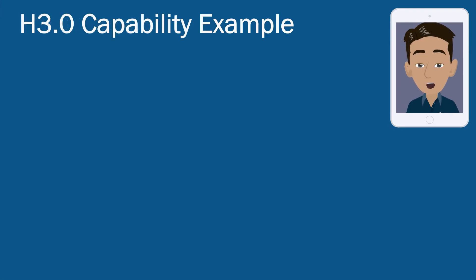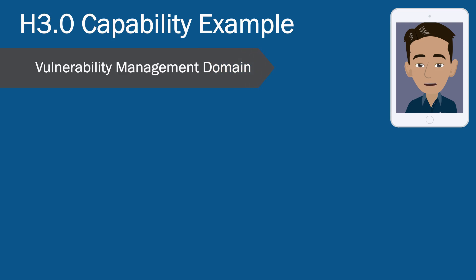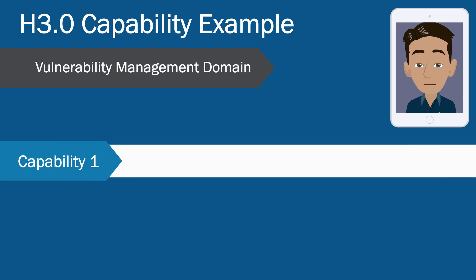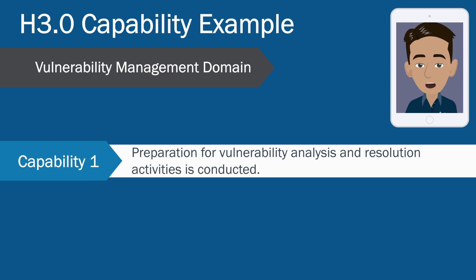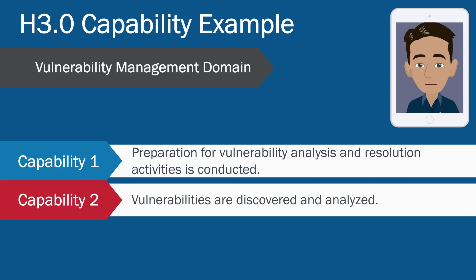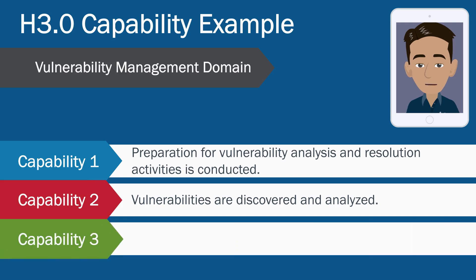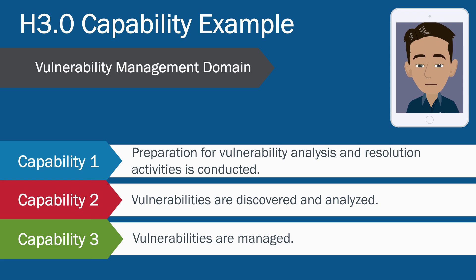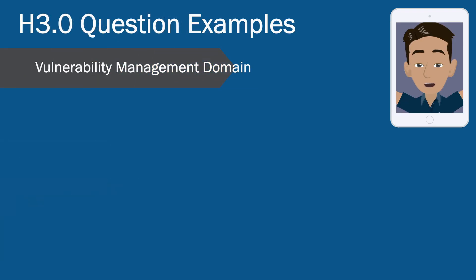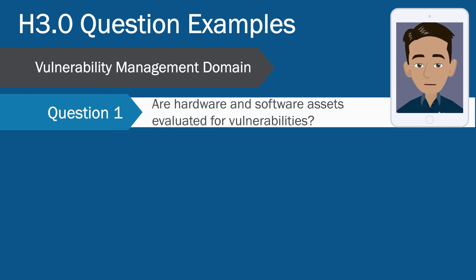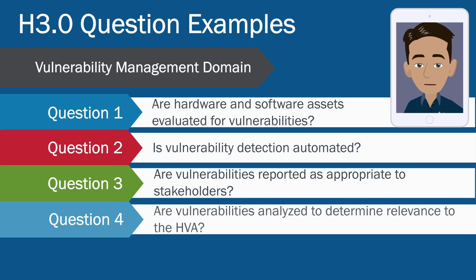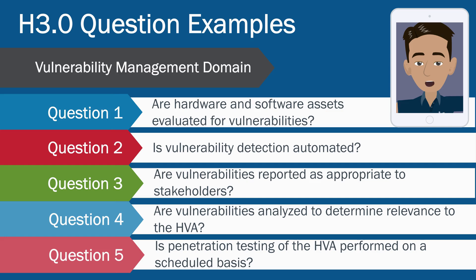Here is a sample of how capabilities are organized in a domain. The vulnerability management domain has three capabilities: one, preparation for vulnerability analysis and resolution activities is conducted; two, vulnerabilities are discovered and analyzed; and three, vulnerabilities are managed. These represent broad categories of activities expected of an HVA in the area of vulnerability management. Looking at the questions for capability two — vulnerabilities are discovered and analyzed — the questions are very specific and can be answered with a clear yes or no. The assessor uses the answers to each question and any follow-up questions to decide if the HVA is adequately performing the capability.